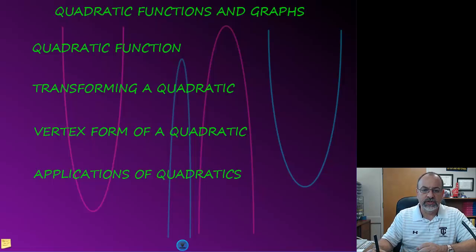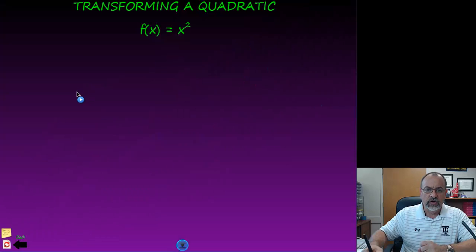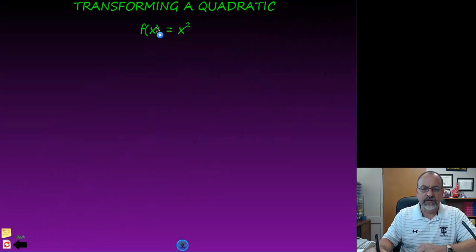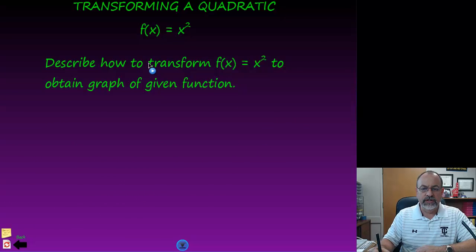And then we talked about a vertical stretch being when we multiply the entire function by a value c. And a horizontal stretch where we replace the x values with the quantity x over c, where c is the factor of the stretch or the shrink. So when we're looking at the original function of x squared and we want to describe the transformation in order to graph, we just need to look at those transformations and then we can make a quick sketch of the graph from those transformations.